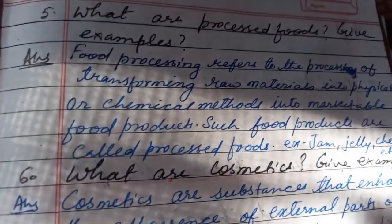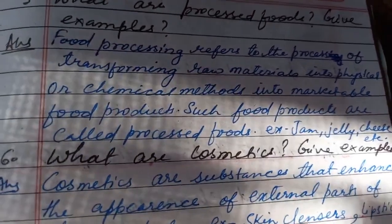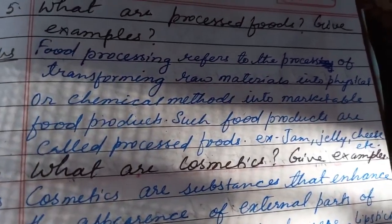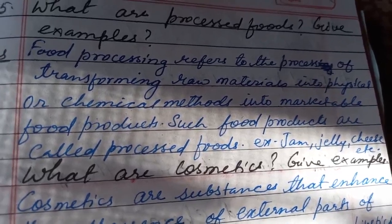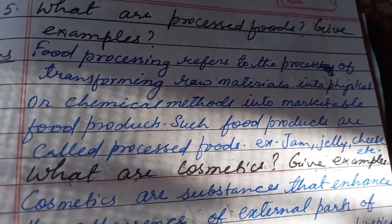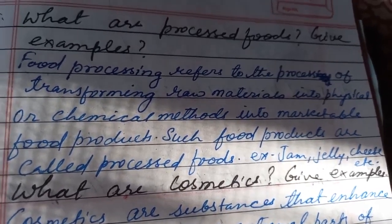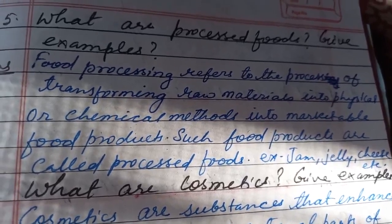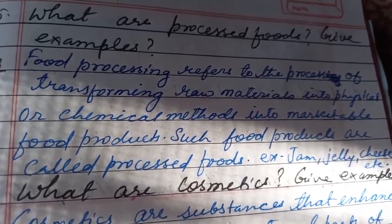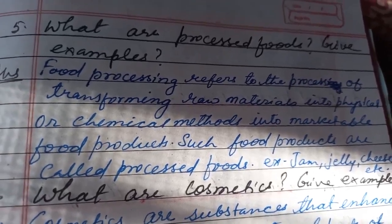Next question: What are processed foods? Give examples. You will write: food processing refers to the process of transforming raw materials by physical or chemical methods into marketable food products. Such food products are called processed food. For example, jam, jelly, cheese, etc. Put a full stop.